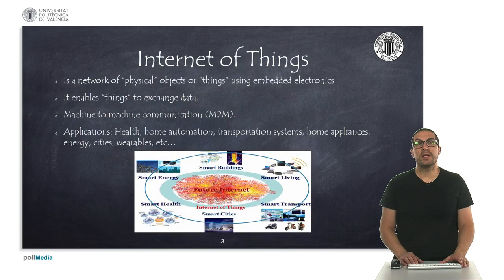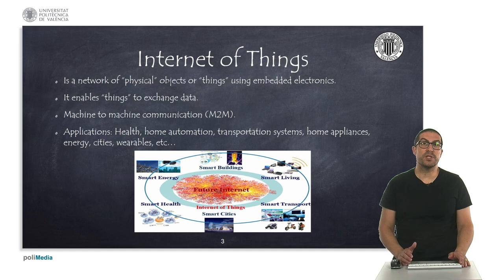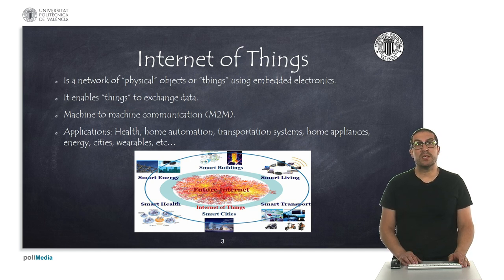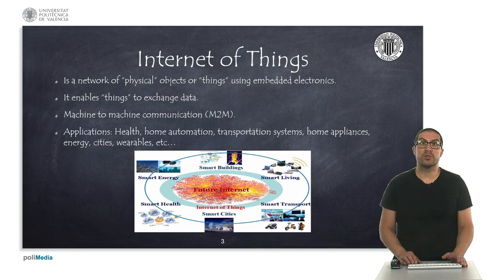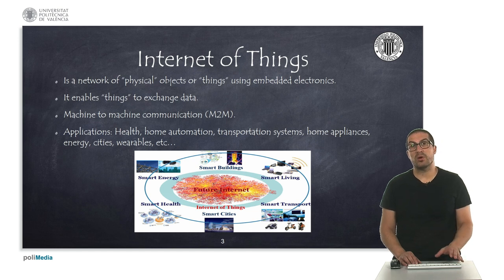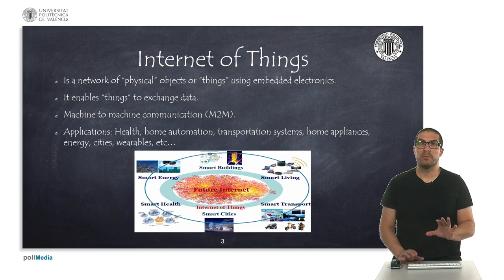The Internet of Things is a network of physical objects or things. They use embedded electronics to interchange data with other devices or machines. Typically, the type of communication between devices has some constraints about the transfer rate, mostly due to power consumption constraints. As a consequence, there are specialized protocols to transfer data between two machines in IoT applications. We will see these aspects in more detail in the second part of this course.